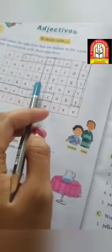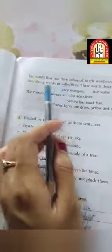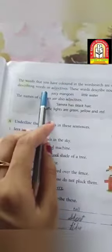So now we will know what are adjectives. The words that you have colored in the word search are called describing words or adjectives. These words describe nouns. Water is little, little is describing the word water. So little is our describing word or we can say it is our adjective.